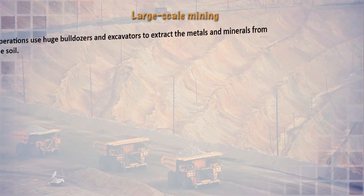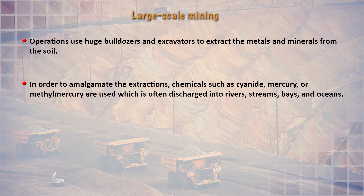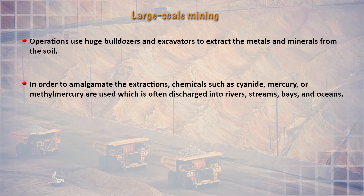In mining, there are large-scale as well as small-scale mining operations. Large-scale mining is carried out by a company that employs several people using huge bulldozers and excavators to extract metal and minerals from the soil. To amalgamate the extraction, certain chemicals are used, including cyanide, mercury, and methyl mercury. Unintentionally, these chemicals can enter rivers, nearby streams, and oceans. Cyanide and mercury are very toxic — mercury is a toxic heavy metal that can cause irreversible damage to the environment and human health.